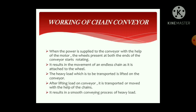Working of Chain Conveyor. When the power is supplied to the conveyor with the help of the motor, the wheels present at both ends of the conveyor start rotating, resulting in a smooth movement of the endless chain. The heavy load which is to be transported is lifted onto the conveyor and transported with the help of the chain. This results in a smooth conveying process of the heavy load towards its destination without any harm.